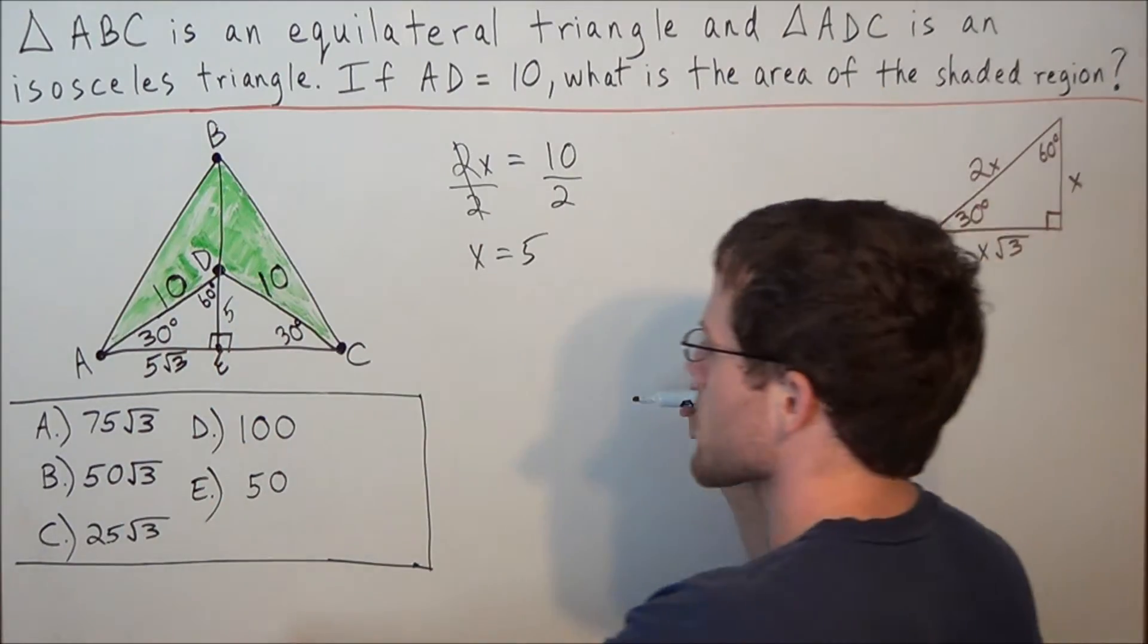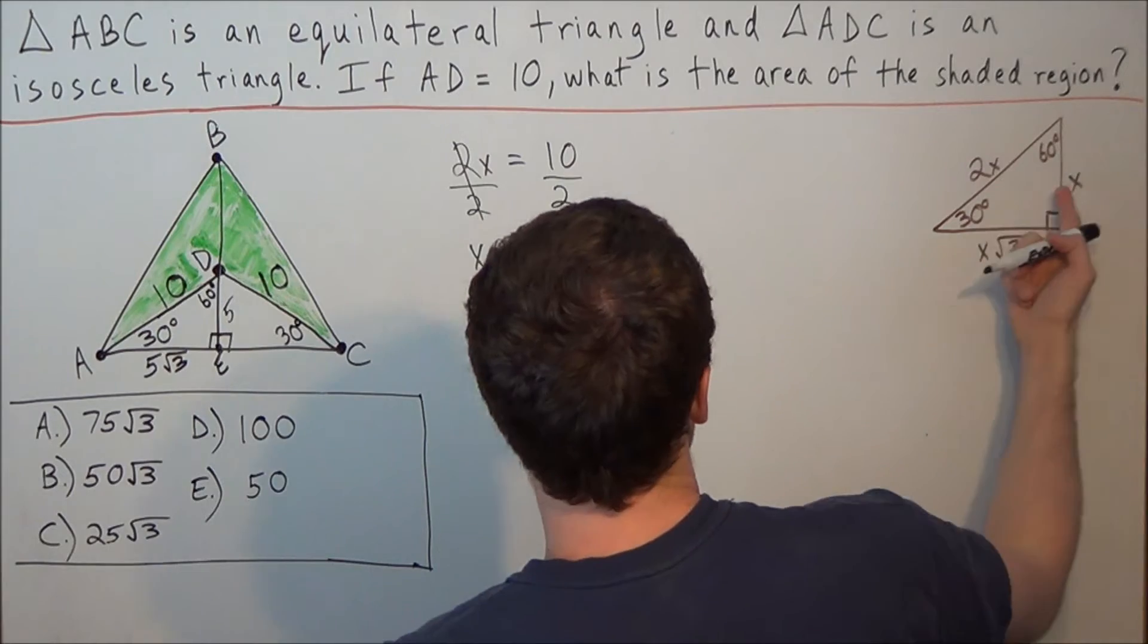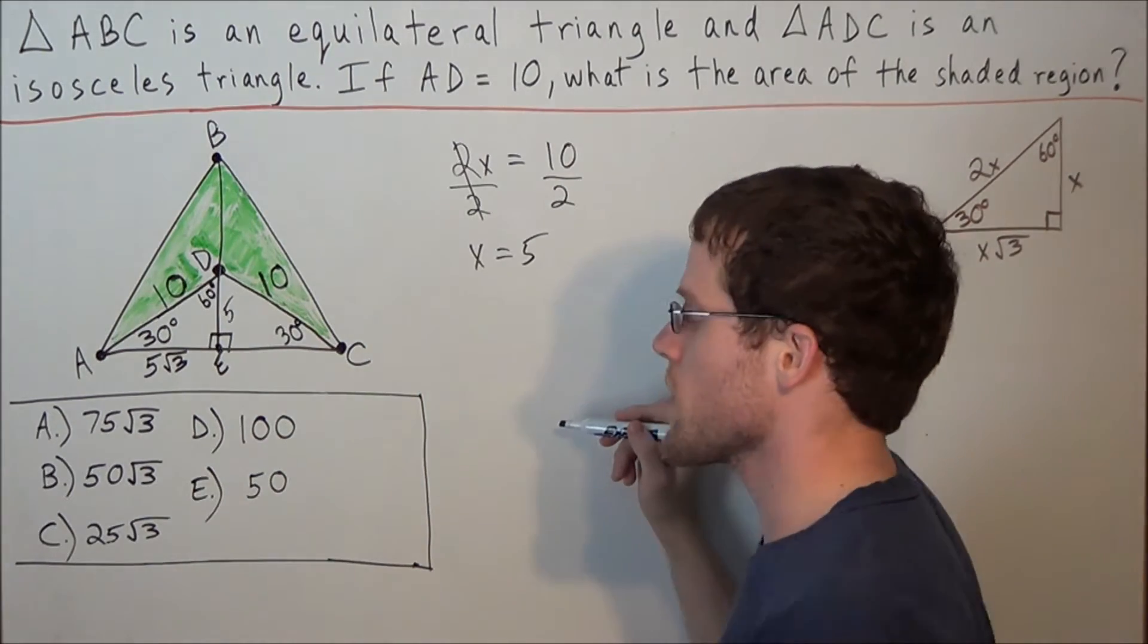So all we did at this step is solve for x, and that allows us to fill in the other sides based on the general 30, 60, 90 triangle.